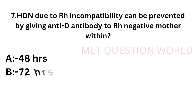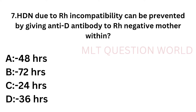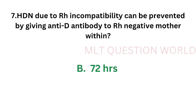Question number 7: Hemolytic disease of the newborn due to RH incompatibility can be prevented by giving anti-D antibody to an RH negative mother within — option A: 48 hours, option B: 72 hours, option C: 24 hours, option D: 36 hours. The correct answer is option B, 72 hours. Hemolytic disease of newborn due to RH incompatibility can be prevented by giving anti-D antibody to an RH negative mother within 72 hours.